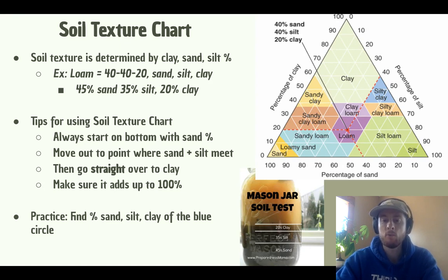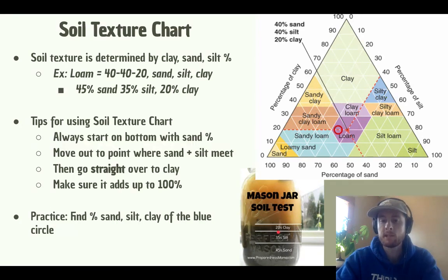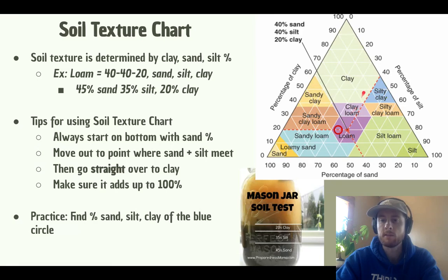Looking at the example in the mason jar on the screen, this is going to be 45% sand, 35% silt, and 20% clay. Taking a look on our soil texture chart, we would see that lines up in the loam category — because we have 45% sand, following out to 35% silt, and then over to 20% clay. So this soil would be categorized as a loam soil.